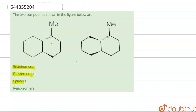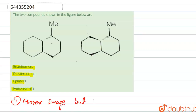First we have to know about enantiomers. Enantiomers are the mirror image of each other, but not superimposable — you can say not superimposed with each other.